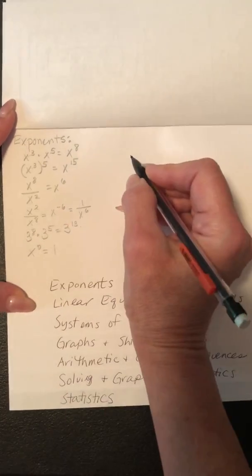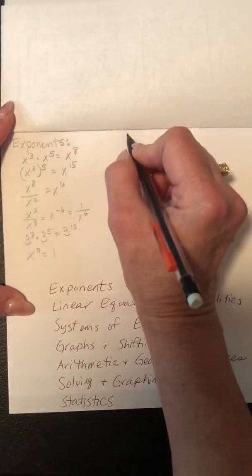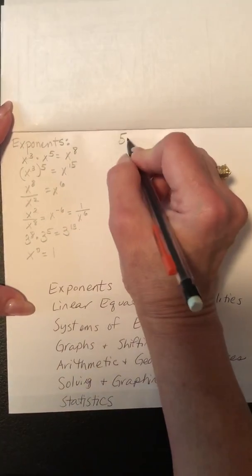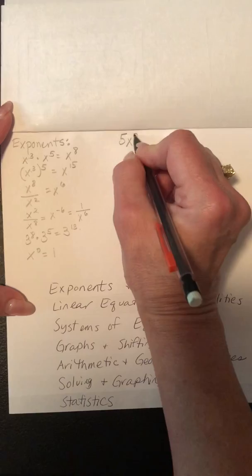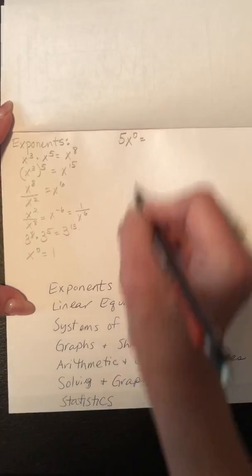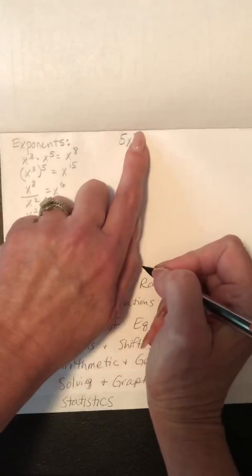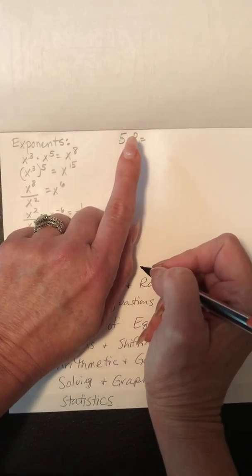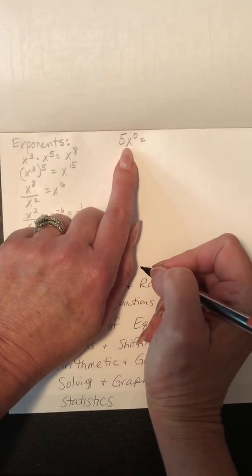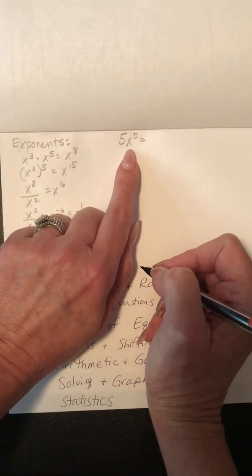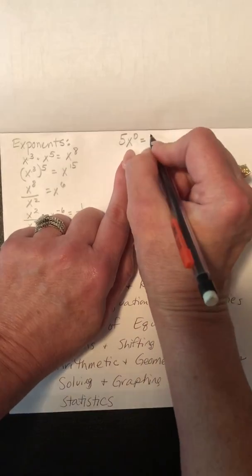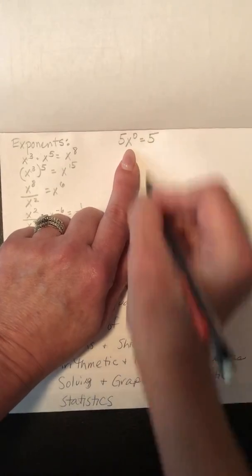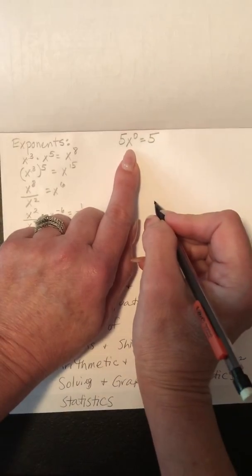Just be careful — sometimes they try to trick you. Like if you have 5x to the 0, only the x is getting the 0 exponent. So x to the 0 is 1, and 5 times 1 is 5. Don't let them trick you.